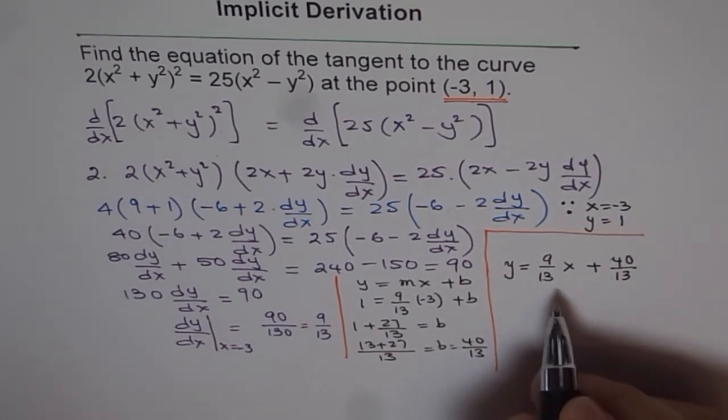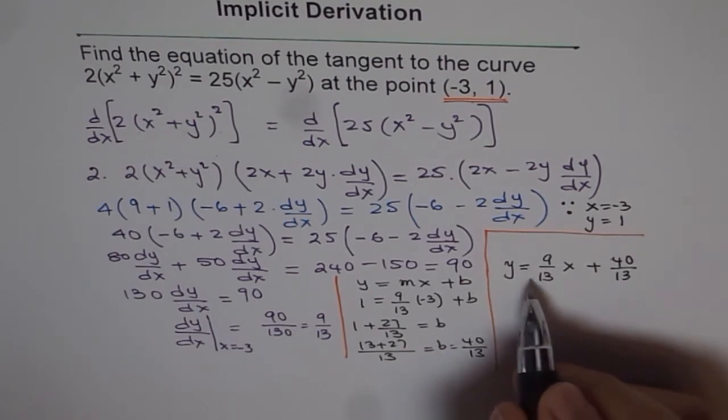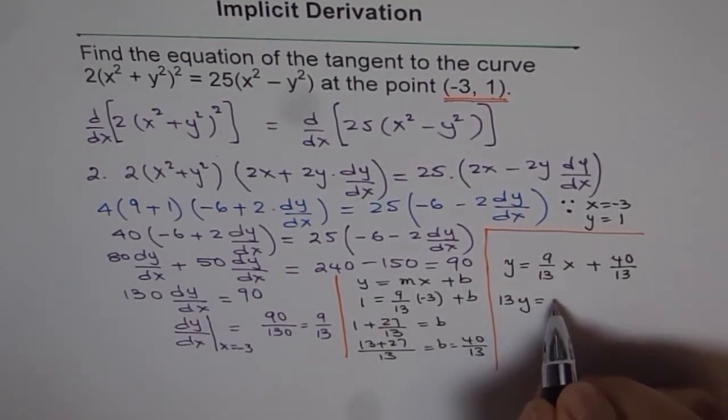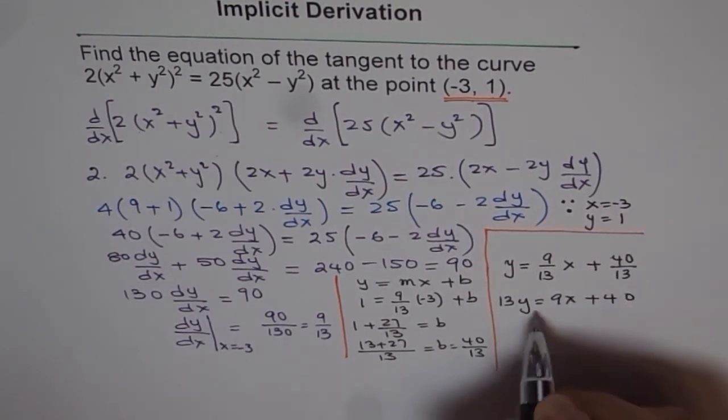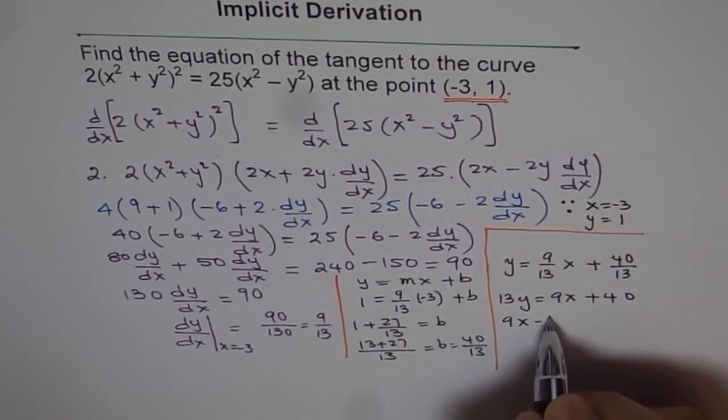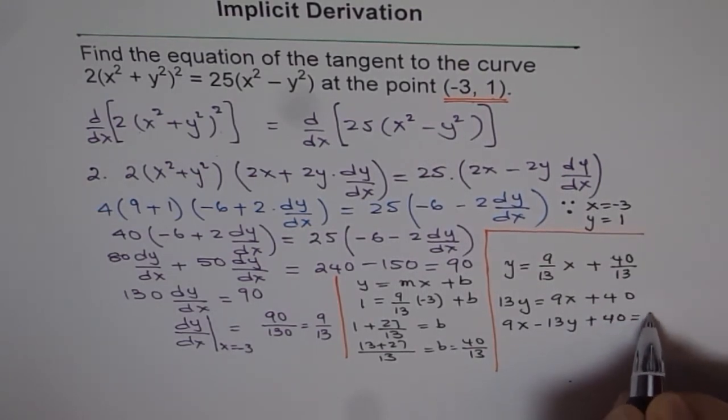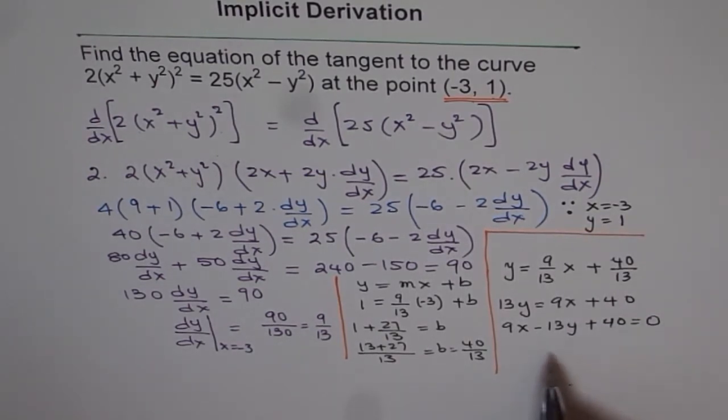Now in case you want to write it in standard form, then you can always multiply by 13 and say 13y = 9x + 40, or 9x - 13y + 40 = 0. So that could be in standard form. So that is our answer.